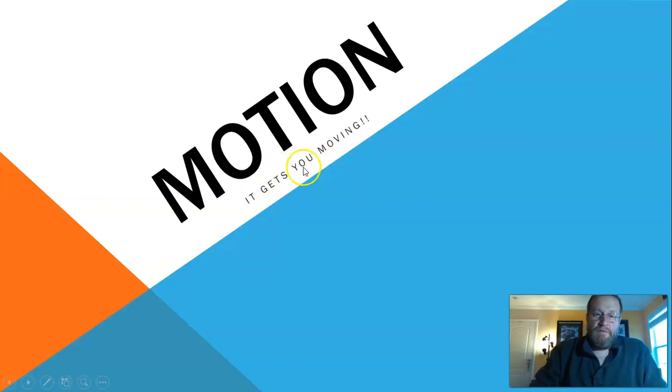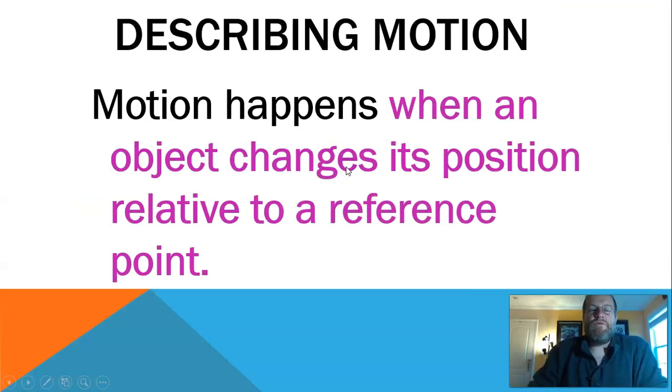So motion is not the definition, that's the title slide. Get you moving. The definition of motion is this: motion happens when an object changes its position relative to a reference point.